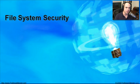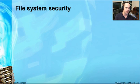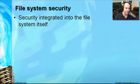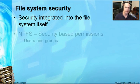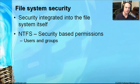Now that you've authenticated into the network using your username, password, maybe biometrics, or your token generator, you're in the file system. There needs to be some type of security in the file system itself to provide extra layers of security. The file system in the operating system has built-in security functionality — NTFS was designed from the very beginning with security in mind, so there are extensive security-based permissions embedded within the file system itself.